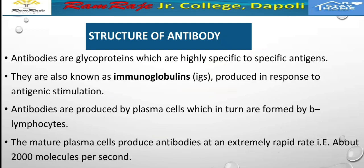The antibodies are produced by plasma cells, which in turn are formed by B lymphocytes. The mature plasma cells produce antibodies at an extremely rapid rate, that is about 2000 molecules per second.